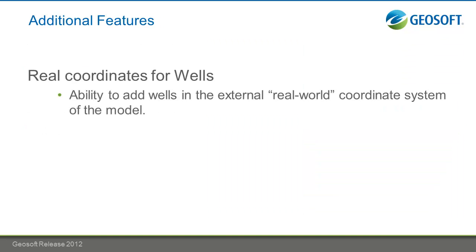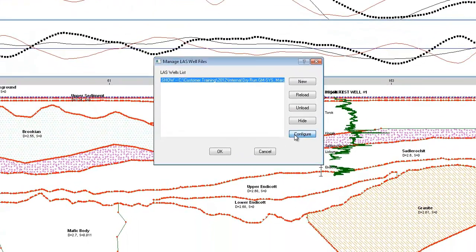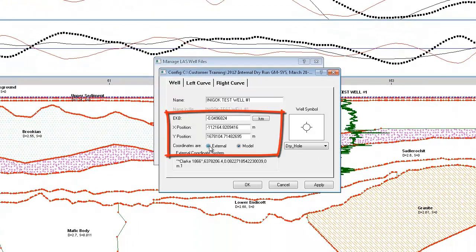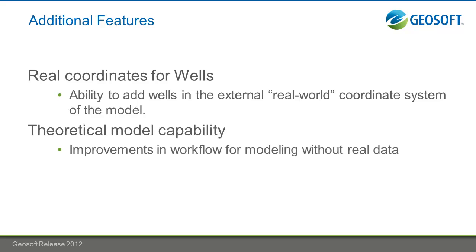You now have the ability to add wells using external real-world coordinates instead of model profile coordinates. Previously, you had to do that conversion from real-world coordinates to profile coordinates, but now you're able to just check off that you're interested in external real coordinates and bring in your LAS or well files. We've also made workflow improvements for GM-SYS profile modeling in the absence of observed data, where you can specify the number and locations of calculated stations, including support for draped surveys, within a single dialog box.